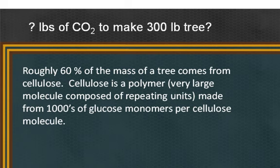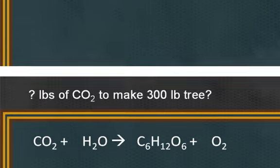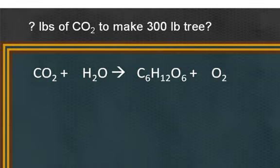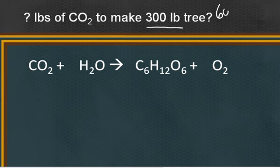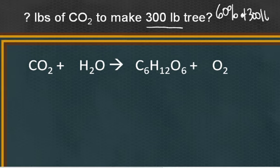Knowing that 60% of the mass of the tree comes from cellulose, and the cellulose is made of glucose, and glucose is made from carbon dioxide in photosynthesis, we can answer this question. First of all, the 300 pound tree: 60% of its mass is from cellulose. So 60% of 300 pounds gives us the cellulose portion.